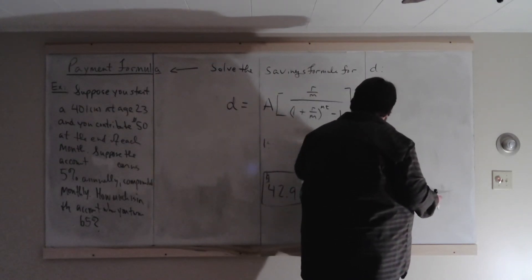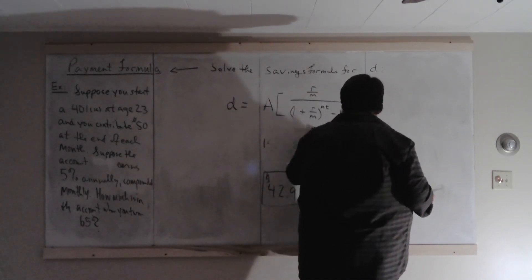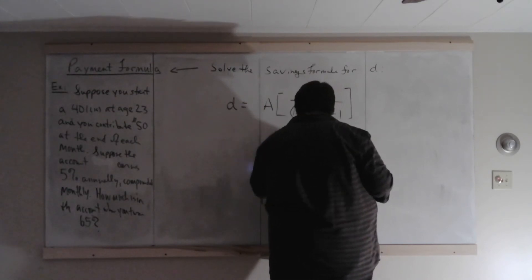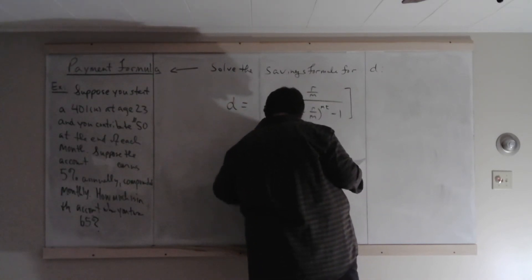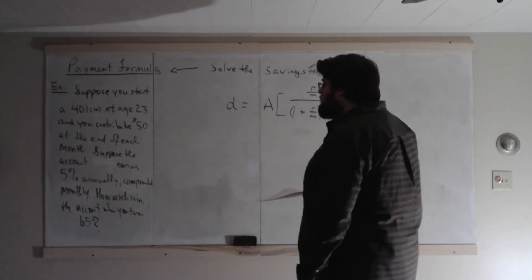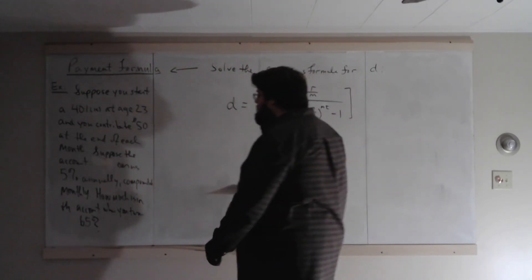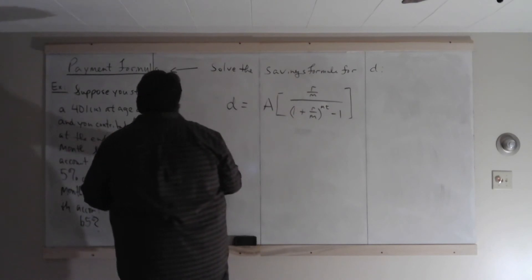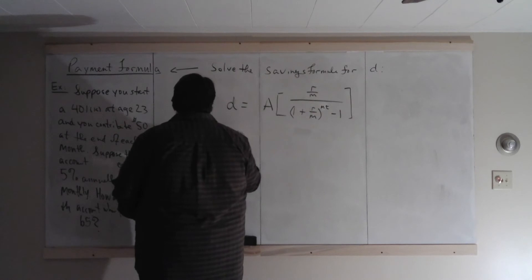The payment formula tells you what your periodic payment should be. But we know what the periodic payment should be. What we're looking for is what happens across a time period. So here we would use the savings formula.